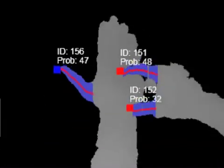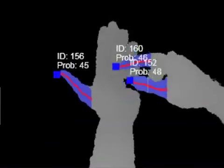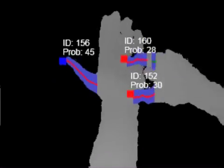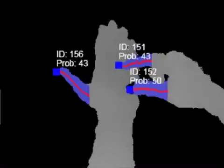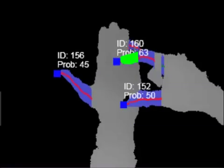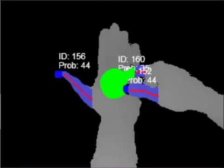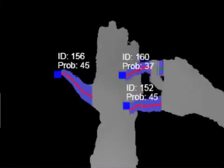To detect clicking, we do a bounded flood fill operation, starting at the fingertip, using a depth delta tolerance of roughly 1 centimeter. Typically, the flood fill expands to encompass the finger. However, when a finger is touching an object, the fill operation floods out onto the contacting surface as well. We detect this as a finger click.